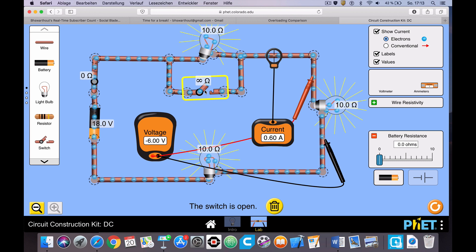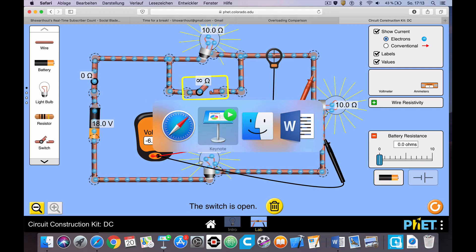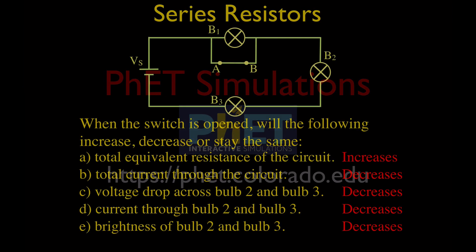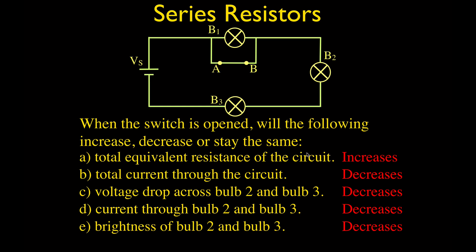Let's go back to our presentation for a quick summary. The total equivalent resistance of the circuit increases. Therefore, the total current decreases. The voltage drop across bulbs 2 and 3 decreases, because we're splitting the voltage across an additional bulb — three bulbs instead of two. The current through each bulb decreases because the total current decreased. And the brightness of those two bulbs decreases, because brightness equals current times voltage, and both the current and the voltage decreased.